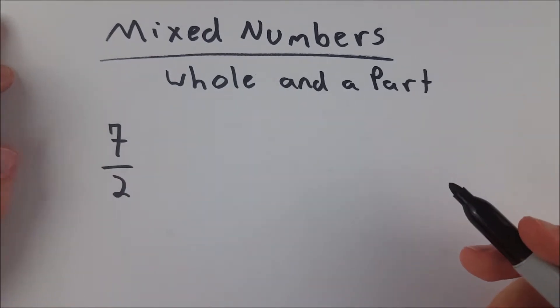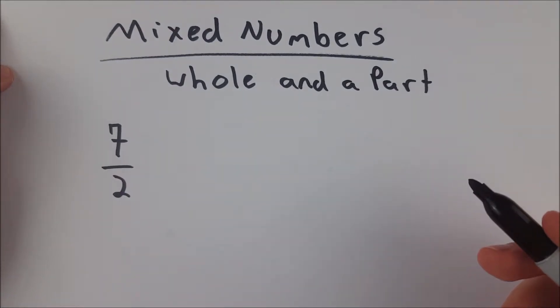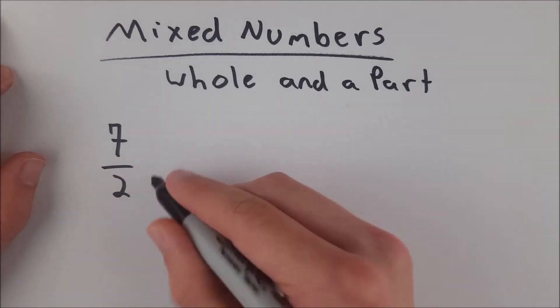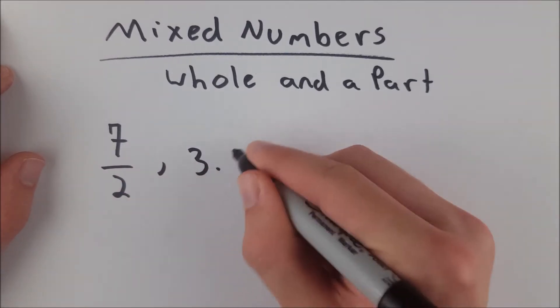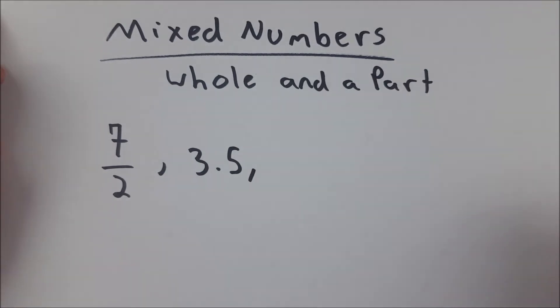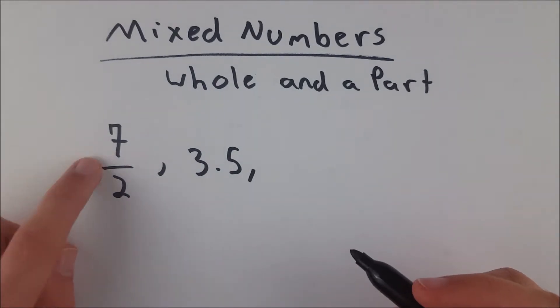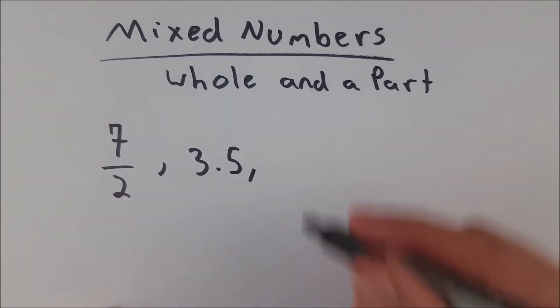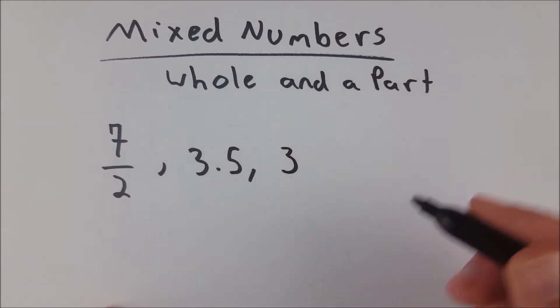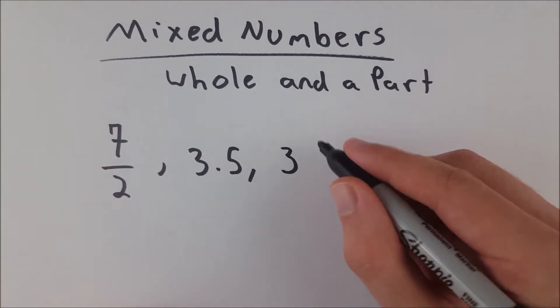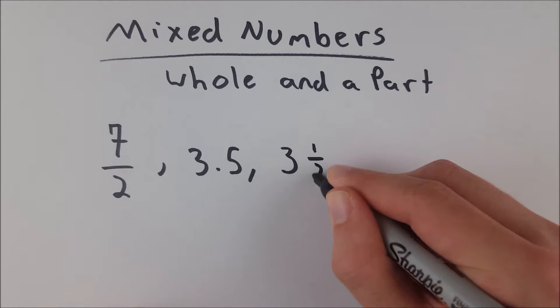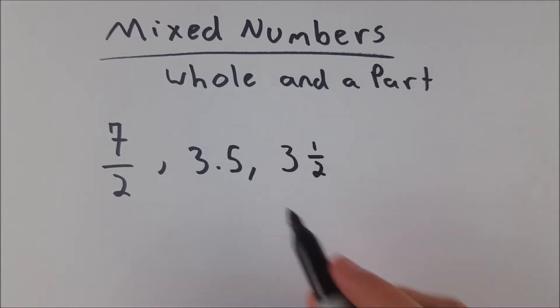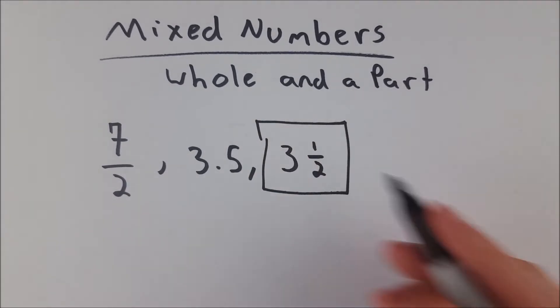So if we represented that as a mixed number, the other way we could represent that, of course we've got seven halves or you could write it as 3.5. But then as a mixed number, well we can ask how many times does two go into seven? It goes into seven three times and that leaves us one half. So we just put one half right next to the three, and this is the anatomy of a mixed number.